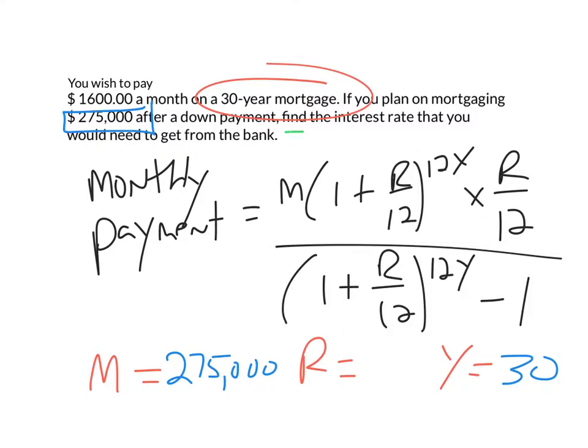But here the question says, find the interest rate you would need to get from the bank. So here our R is going to be our X value. So we're going to plug in our M, $275,000, our Y's, that's going to be 30. And here we're going to go about solving for our R value.